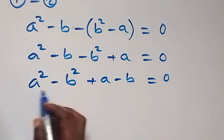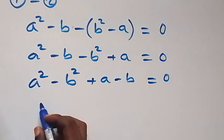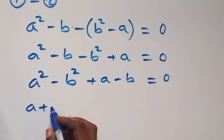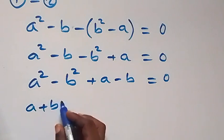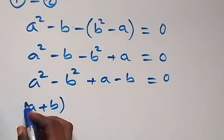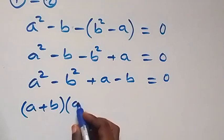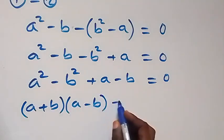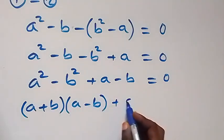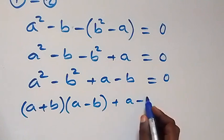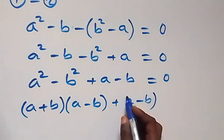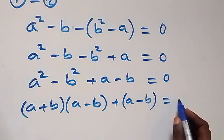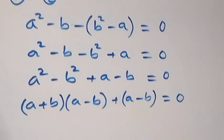Then from here we have a difference of squares, which we can write as (A plus B) times (A minus B), then plus (A minus B), equals to 0.